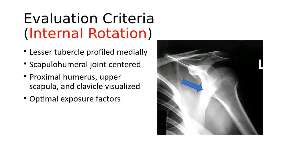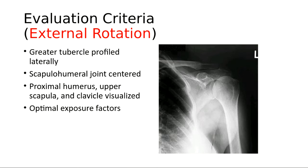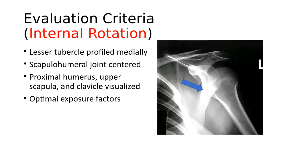The arrow highlights the lesser tubercle, which is a little hard to see. The lesser tubercle gets put in profile medially on the internal rotation. So on the external rotation the greater tubercle is profiled laterally, and on the internal rotation you're profiling the lesser tubercle medially. The only thing wrong with this image is missing the sternal end of the clavicle.